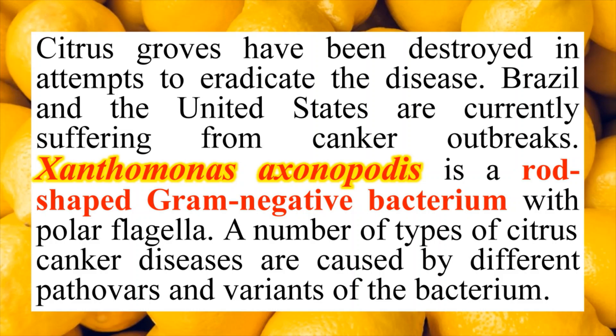Citrus crops have been destroyed by this disease, especially in Brazil and the United States of America. As mentioned, the pathogen is a bacterium called Xanthomonas axonopodis, which is a rod-shaped, gram-negative bacterium with polar flagella. There are a number of pathovars — that is, variants of this bacterium — which cause a number of variants of the same disease.